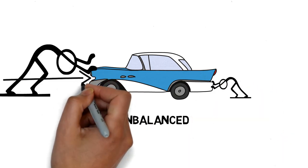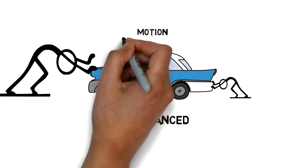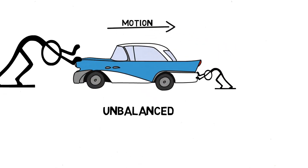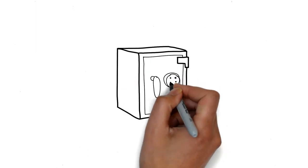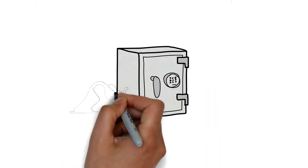But if two forces are unequal, it would lead to motion of the object in the direction of the stronger force. But wait, how would you explain a big heavy crate which is being pushed by a strong man and still refuses to move?